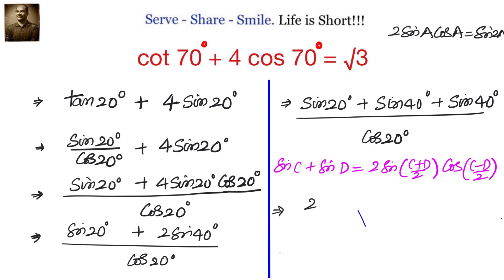2 sin 20 plus sin 40, which becomes 2 sin of 20 plus 40 by 2, that is 30 degrees, multiply with cos 10 degrees plus sin 40 degrees divided by cos 20.